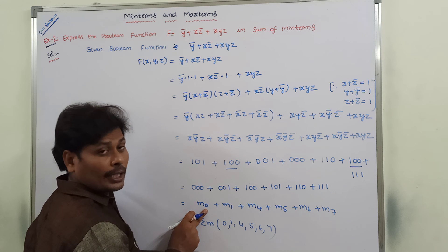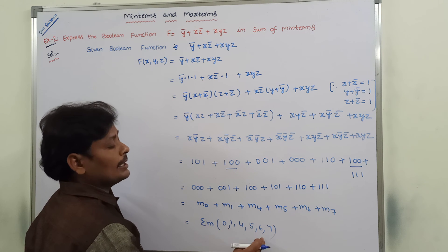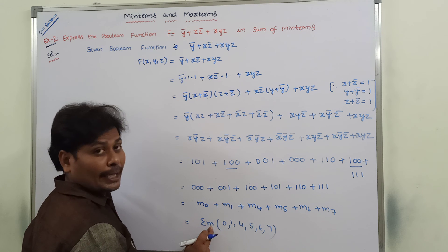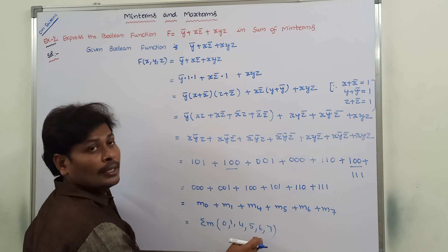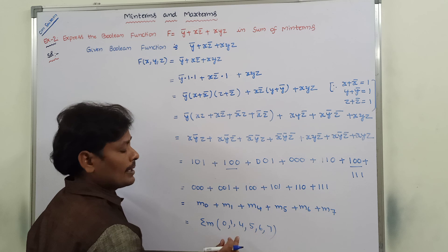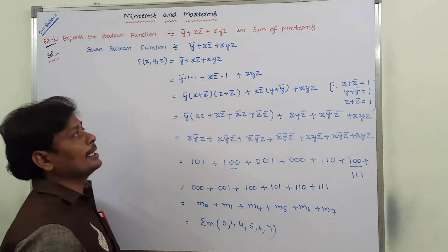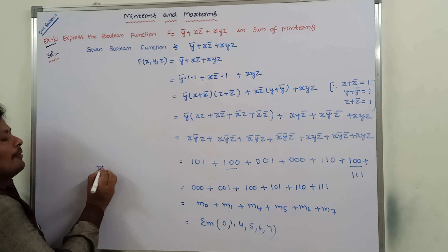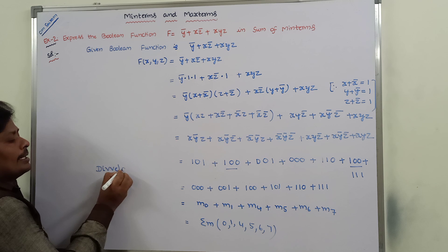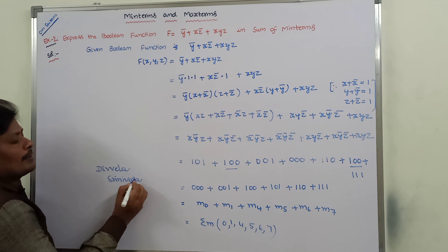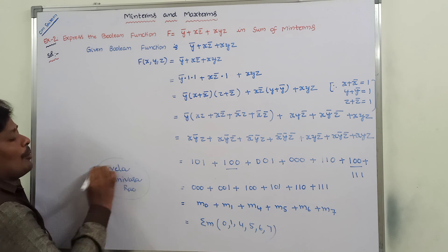The numbers in the suffix, separated by commas, are the minterms: 0, 1, 4, 5, 6, and 7. In this way, we solve the given problem. Thank you for watching this video. If you like this video, please share it with your friends and classmates and subscribe to my channel, The Bellasri Nimas Rao.